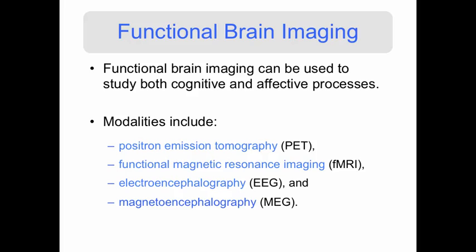Functional brain imaging can be used to study both cognitive and affective processes. Modalities include positron emission tomography or PET, functional magnetic resonance imaging or fMRI — which is the functional analog of MRI — as well as EEG and MEG.